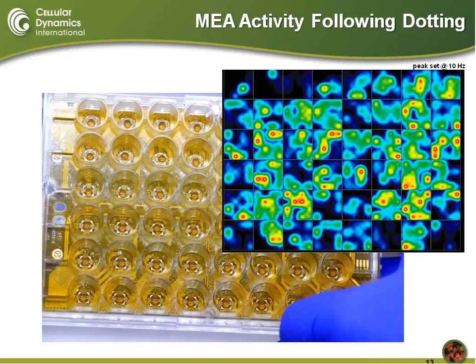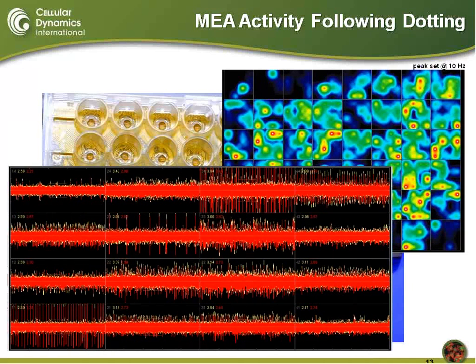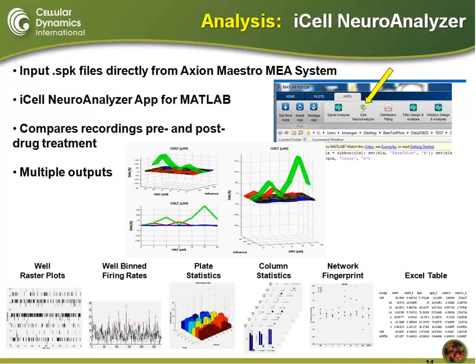This is what an MEA plate looks like after you complete dotting — each well has a dot right in the center. We fill those wells up with media, wait a few days, change it a couple of times, and look at the activity on the plate. On the real-time activity heat map, nearly every electrode in this six-by-eight grid is showing activity. Zooming in to one well to see the activity on all 16 electrodes, you can observe spontaneous action potentials occurring across all these electrodes. We really needed to turn that heat map and these spikes into numbers and graphs, and so we introduce CDI's new approach: the iCell Neural Analyzer.